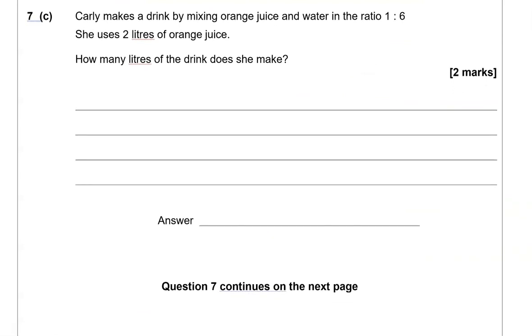Carly makes a drink by mixing orange juice and water in the ratio 1 to 6. She uses two litres of orange juice. How many litres of the drink does she make? So the ratio is 1 to 6. One stands for orange juice and six for water. So this means one litre of orange juice will be mixed with six litres of water. She uses two litres of orange juice. So she's doubled the amount of orange juice from the ratio. So we're going to double the amount of water. So that's going to be 12 litres.